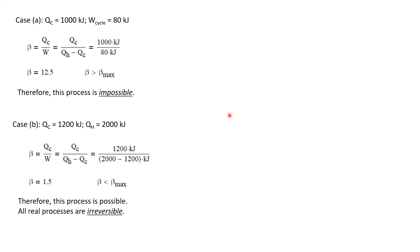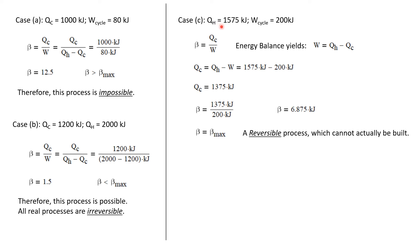Let's look at the third case. We have QH is 1575 kilojoules and the work required by the cycle is 200 kilojoules. We know beta is what we want, QC, divided by what it costs us, the work. An energy balance yields that work is QH minus QC. We can rearrange this and solve for QC. It's QH minus W, and we have both of those terms given in case C. We calculate that QC is 1375 kilojoules.